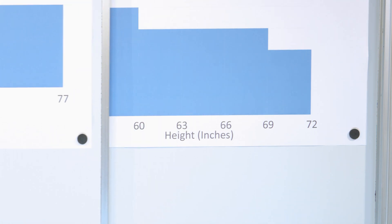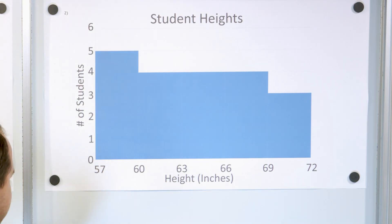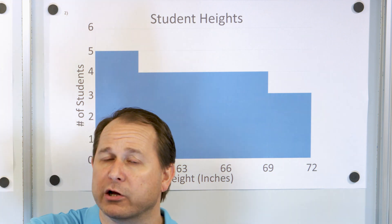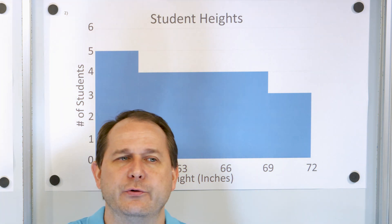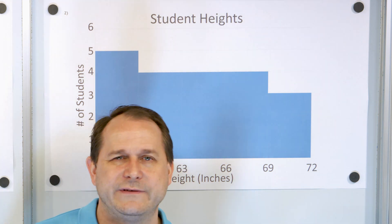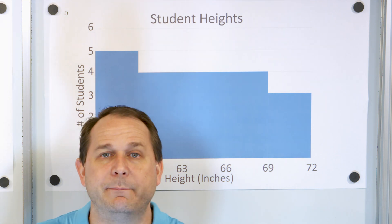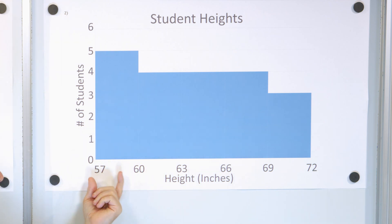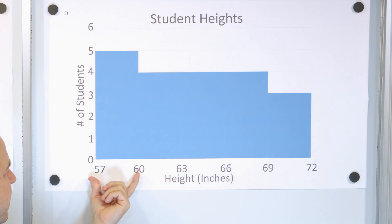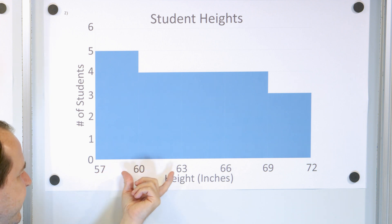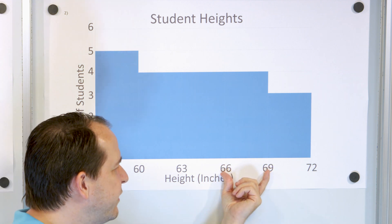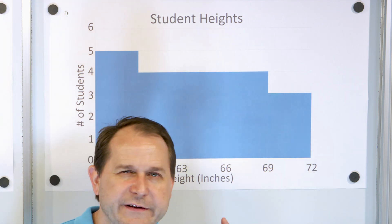Let's take a look at histogram number two — a histogram of the height of students. We line up all our students and measure their heights, but instead of listing every single data point we create bins or buckets. The width of the buckets here: 57 to 60 is a width of three, 60 to 63 is a width of three, 63 to 66 is a width of three, and so on. For a histogram, the widths along the bottom all have to be the same.